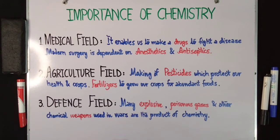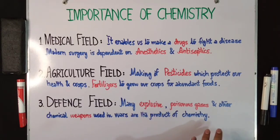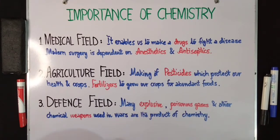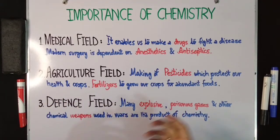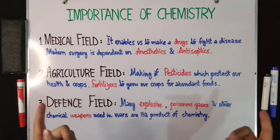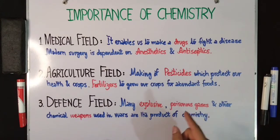Number three is the defense field. 'Many explosives, poisonous gases, and other chemical weapons used in wars are the product of chemistry.' All the explosive materials, poisonous gases, and other weapons used in war — or the weapons held by our security personnel like Rangers and police, including tear gas — all of these are made from chemicals.